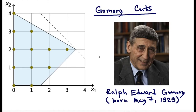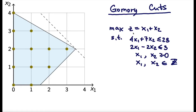We'll illustrate the ideas of Gomory cuts using a simple two-dimensional example. The formulation is: maximize x1 plus x2, with the isoprofit line shown on the plot. The constraints are 4x1 plus 7x2 is less than or equal to 28, and 2x1 minus 2x2 is less than or equal to 3. Both variables are non-negative and are required to be integer.